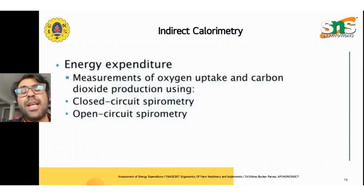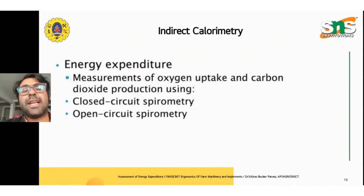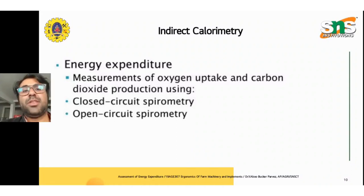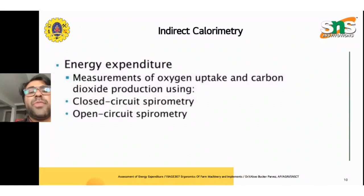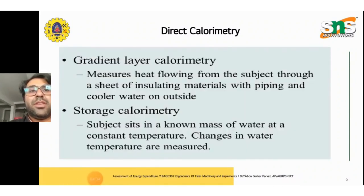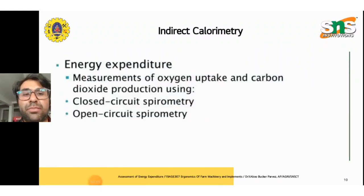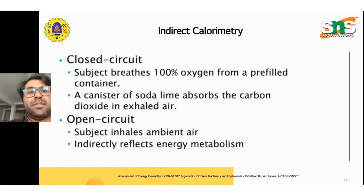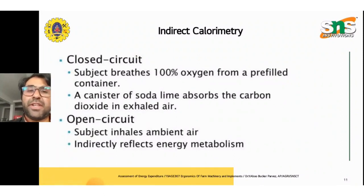The second type is indirect calorimetry, in which energy expenditure is measured via oxygen uptake and carbon dioxide production, using two types: closed circuit spirometry and open circuit spirometry. In this video lecture series, we are going through how the direct calorimetry method and the indirect calorimetry method are used to obtain energy assessment. In closed circuit spirometry, the subject breathes 100% oxygen from a pre-filled container.